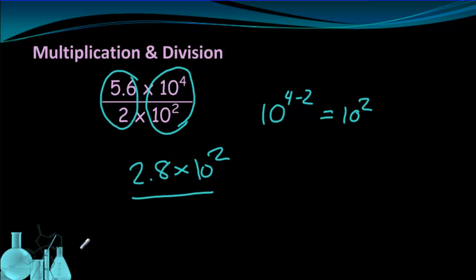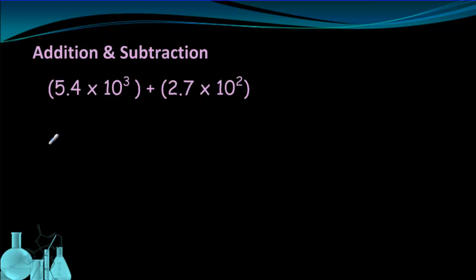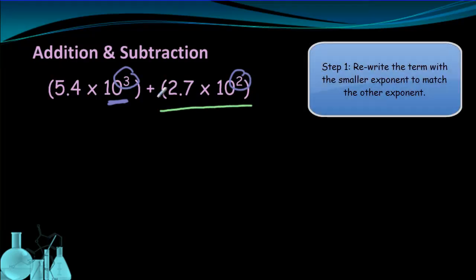Now addition and subtraction work a little bit differently than multiplication and division. So let's take a look at that. Whenever you're adding or subtracting, the first thing you have to do is make sure that the terms with the exponent, the 10 to the third and the 10 to the second, have the same exponent. So right now they don't. This has a 3, this has a 2. That means we need to change one of these two terms. And I always like to change the term that has the lower exponent. So we're going to change this one to match this.